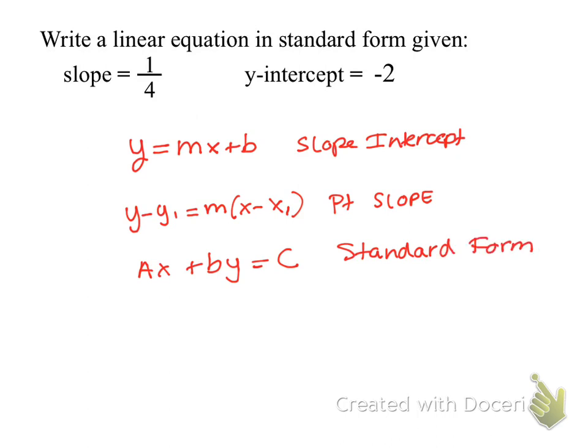Now, in standard form, in order for it to be in standard form, a, b, and c should be integers, not fractions. An integer means a negative or positive whole number. Generally we like a to not be negative. So, whatever we're multiplying it by to get rid of the fraction, we usually try and not start with a leading negative. Does that make sense?